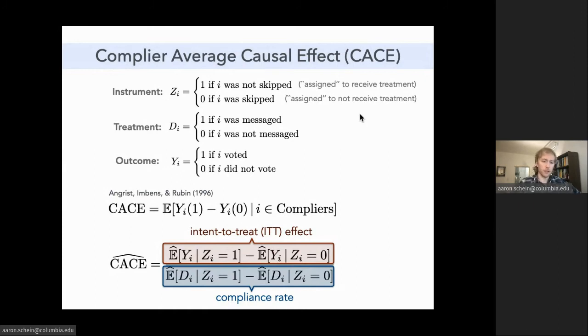The numerator is the intent to treat effect. That's simply the difference in voting rates between subjects that were assigned to receive the treatment versus assigned to not receive the treatment. And the denominator is the compliance rate. This is going to estimate the proportion of subjects that are compliers.